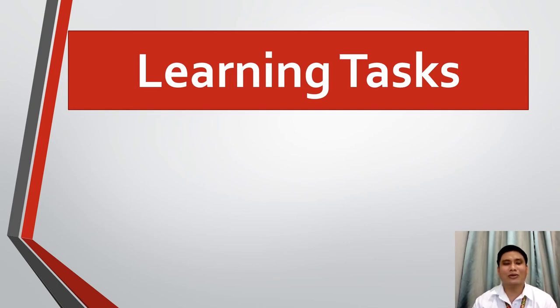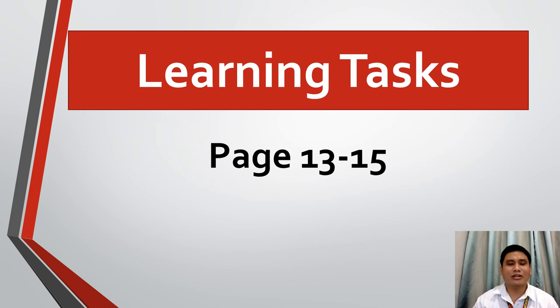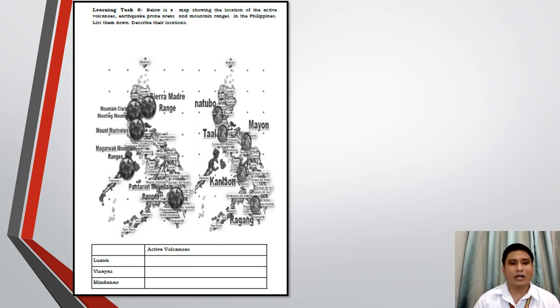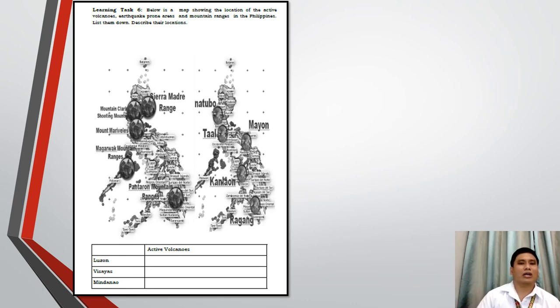Let us proceed to the learning tasks assigned for this week. You can see these learning tasks on pages 13 to 15 of your learner's module. For learning task number 6, you will find a Philippine map showing the location of active volcanoes, earthquake-prone areas, and mountain ranges in the Philippines. Your task is to simply list down the active volcanoes present in Luzon, Visayas, and Mindanao. You can consult this picture, other science books, internet sources such as the website of PHIVOLCS, or your previous notes from grade 9 science class.